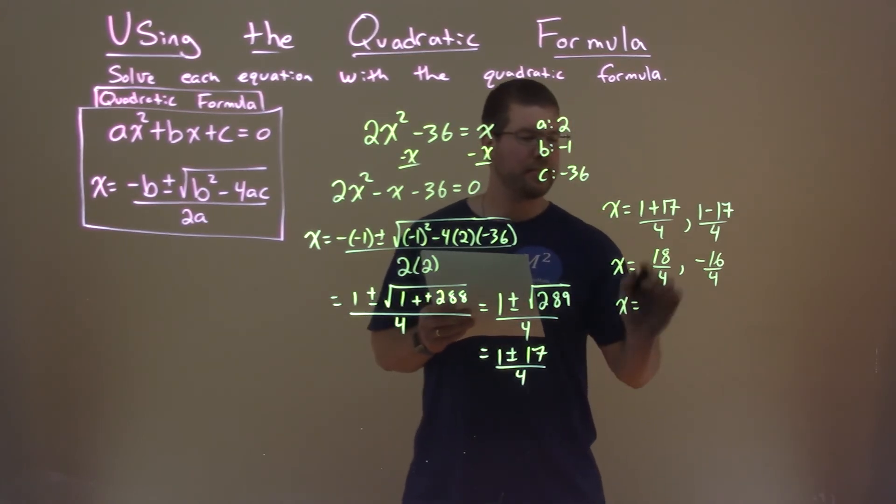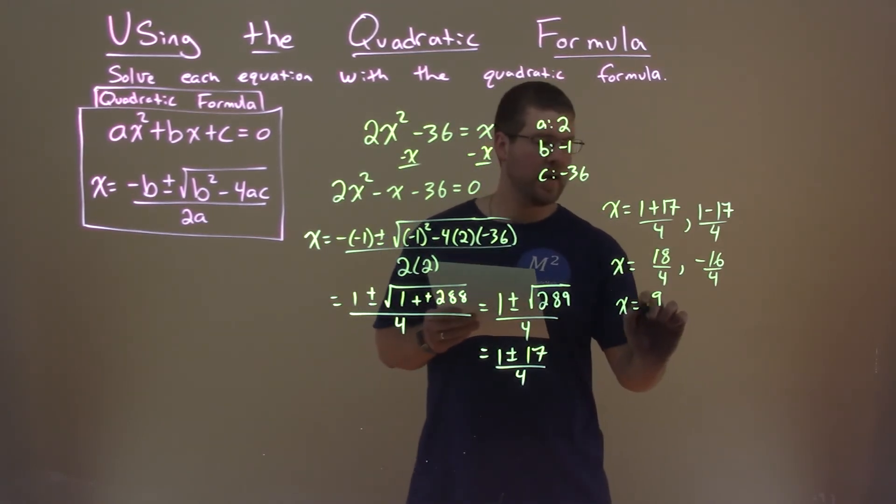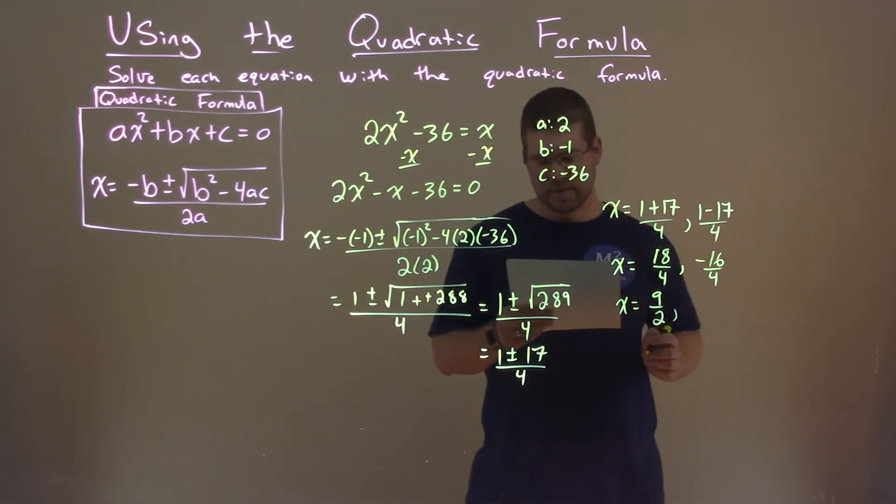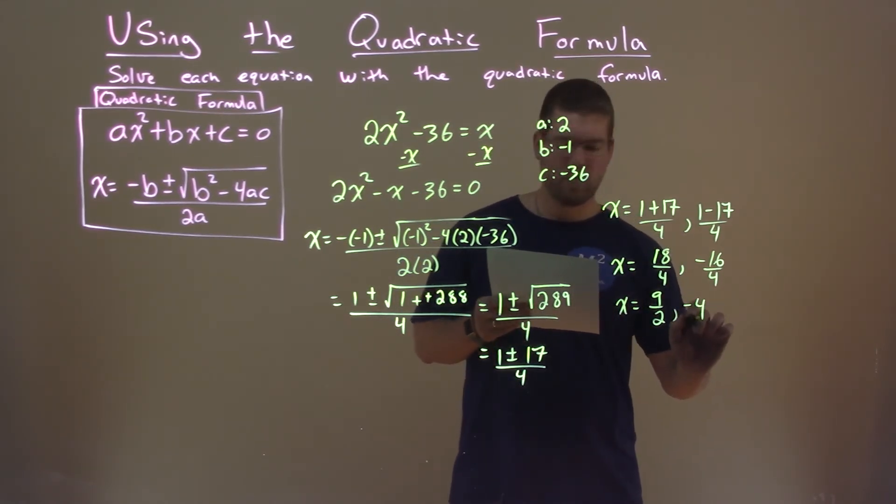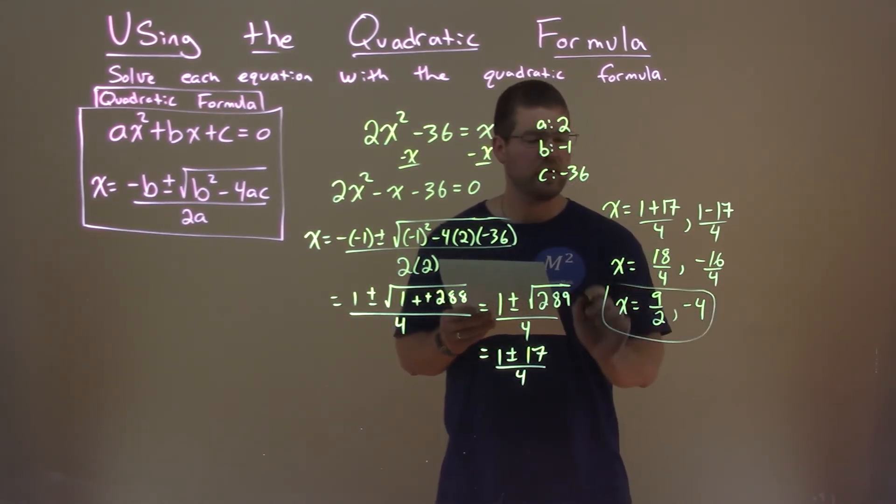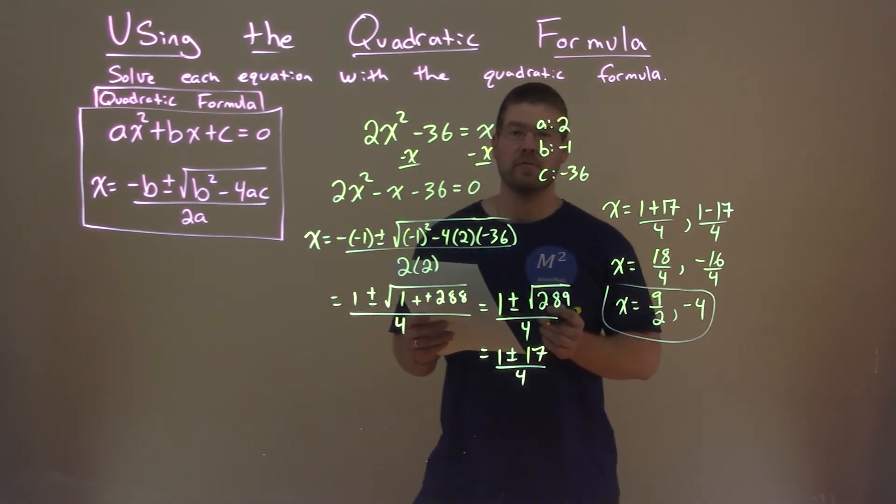So let's go simplify that. 18 over four simplifies to be nine halves, and negative 16 divided by four is a negative four. And so our two answers here are x equals nine halves and negative four.